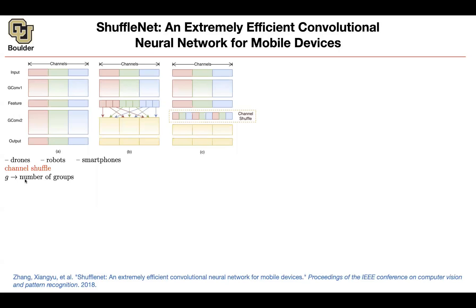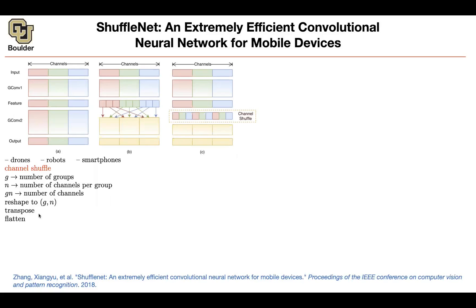You have G as your number of groups — in this case, one, two, three groups. N is the number of channels per group, say 10 channels per group. The total number of channels is G times N. You reshape to a G×N matrix, so it's now two-dimensional. Then you transpose that matrix and flatten it back to one-dimensional. So: start from a vector of size G×N, reshape into a matrix, transpose it, then flatten it back — and that gives you a channel shuffle. It's very cheap and smart.